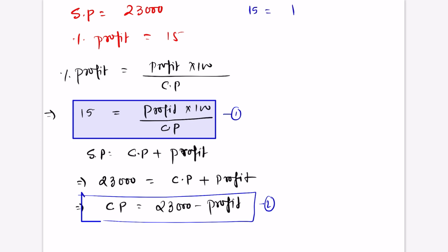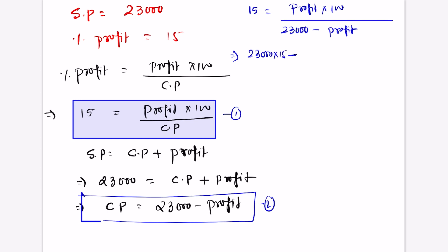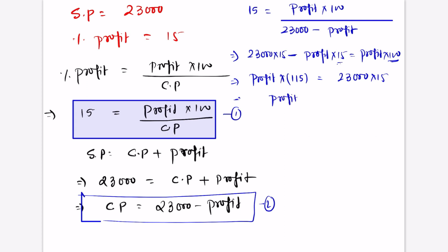Substituting, we get: 15 equals profit into 100 divided by (23,000 minus profit). Cross-multiplying: 23,000 times 15 minus profit times 15 equals profit times 100. Collecting profit terms: profit times 115 equals 23,000 times 15. Therefore profit equals 23,000 times 15 divided by 115.